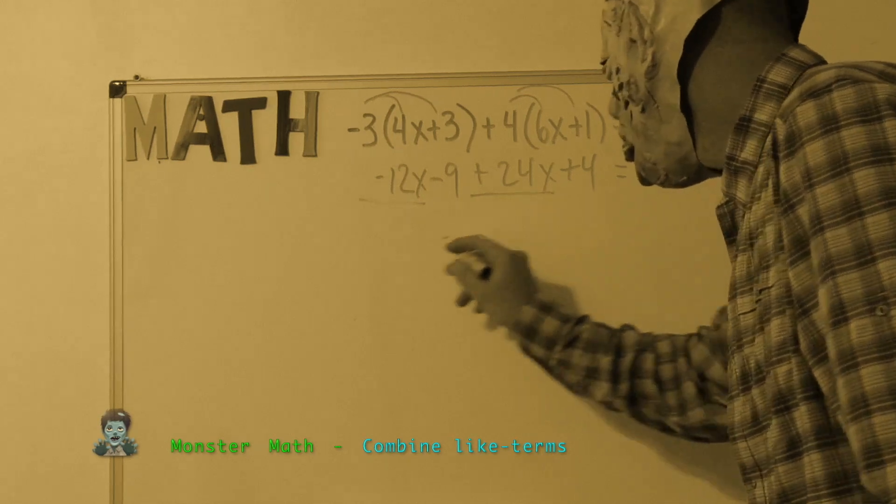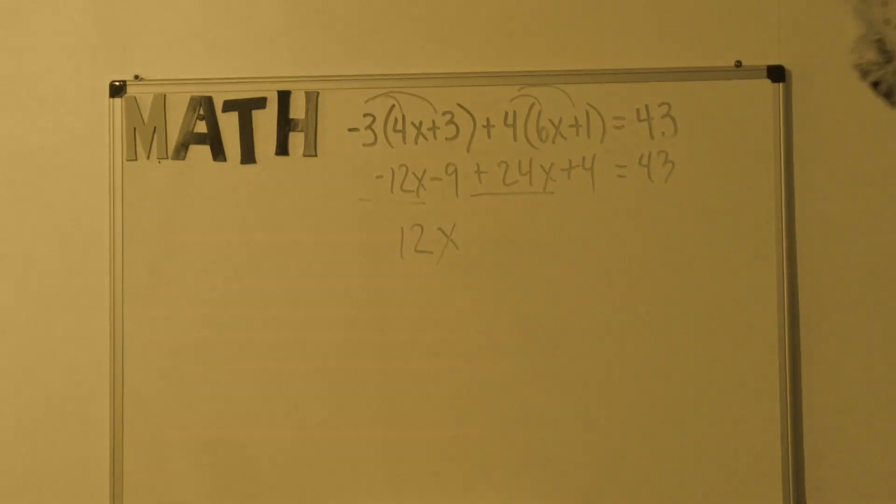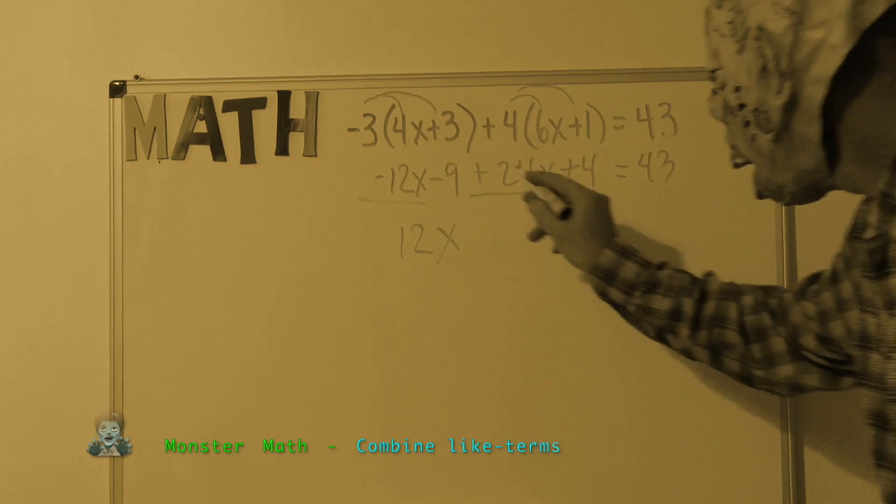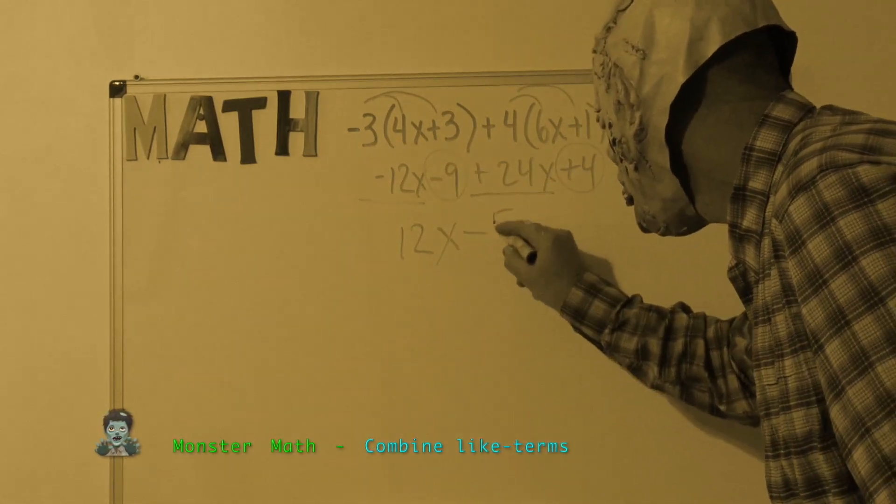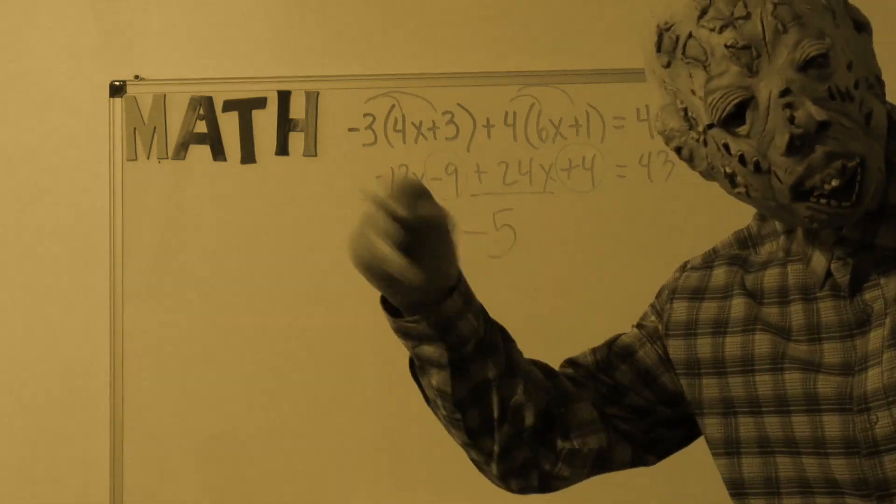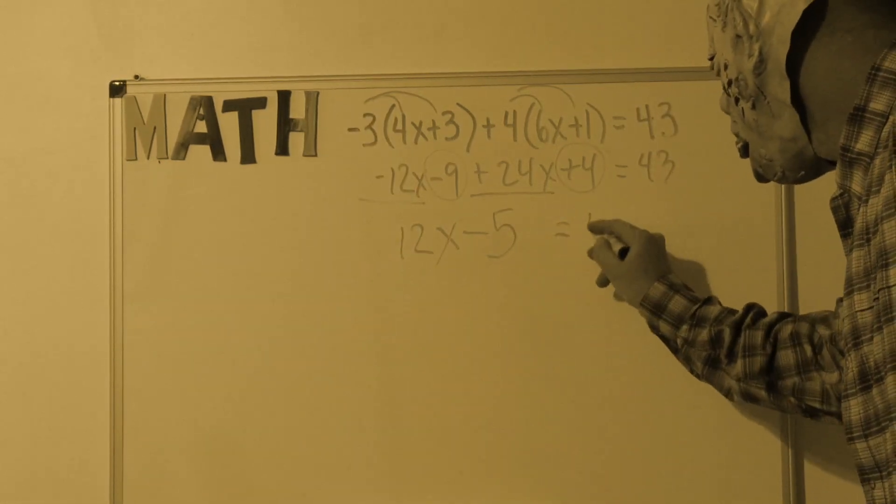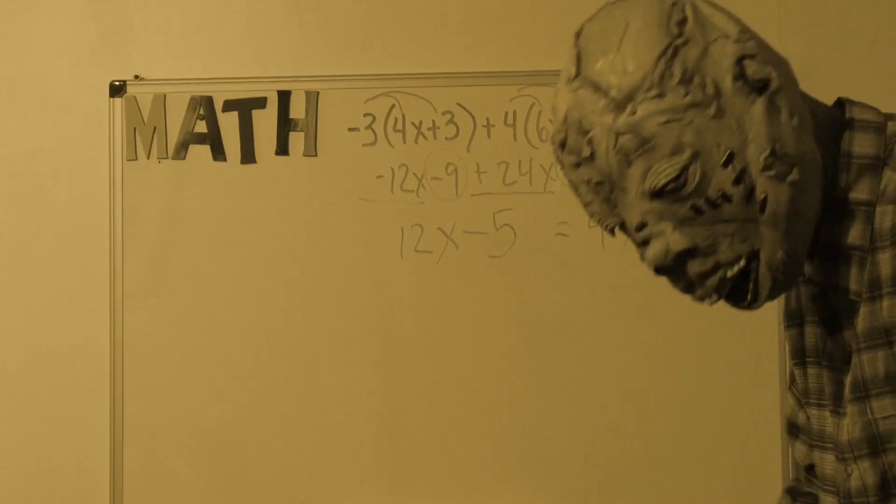It is time to combine like terms which have the same variable and or exponent connected to them. I also have to combine the like terms with no variable. That is an integer addition. It comes out to negative 5.